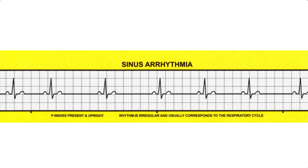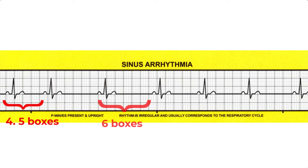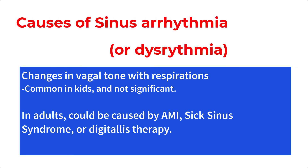A sinus dysrhythmia, or sinus arrhythmia as it's also called, is a somewhat generic label, but we use it to describe a sinus rhythm that is slightly irregular. The rate of impulse formation in the SA node varies instead of its normal, rhythmic, consistent, metronome-type pattern. The most common cause is changes in vagal tone tied to respirations — the rate increases with inspiration and decreases with expiration — and this is common in kids and usually has no clinical significance.